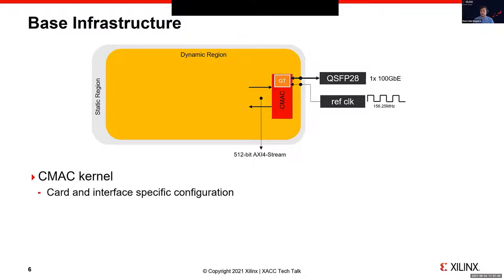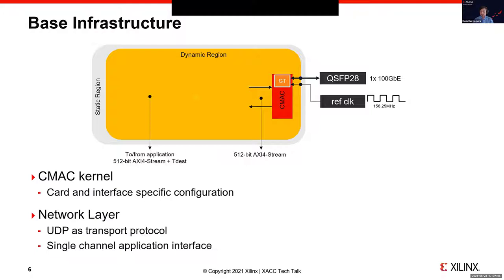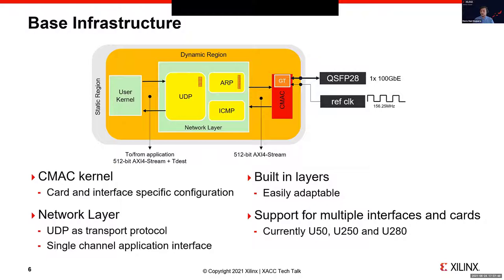In VNX, the design is split into layers. The first layer is the CMAC — the integrated Ethernet subsystem hardened on UltraScale+ devices — connected to the transceiver pins and reference clock via a 512-bit AXI-Stream interface. The next piece is the network layer itself, which uses UDP as the transport protocol with a single-channel application interface to communicate with the compute kernel. VNX supports multiple interfaces and cards — currently U50, U250, and U280.